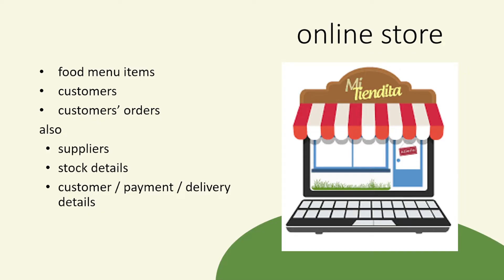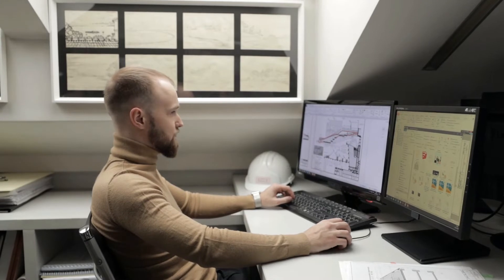We've got food items on a menu, we've got customers, and we've got orders. We've got other things such as supplies, details, and stock. But the main point of what we want to build sticks with the food items, the customers, and the customers' orders. So that's where we start.